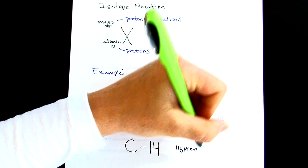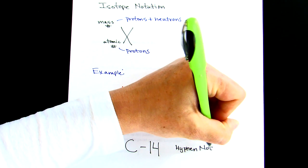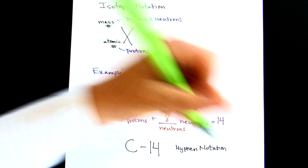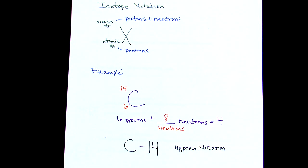You don't need to necessarily know this, but you might see it. And that's what it is, hyphen notation. And it doesn't have the atomic number, because they figure you can look at a periodic table, find carbon, and find that the atomic number is six.